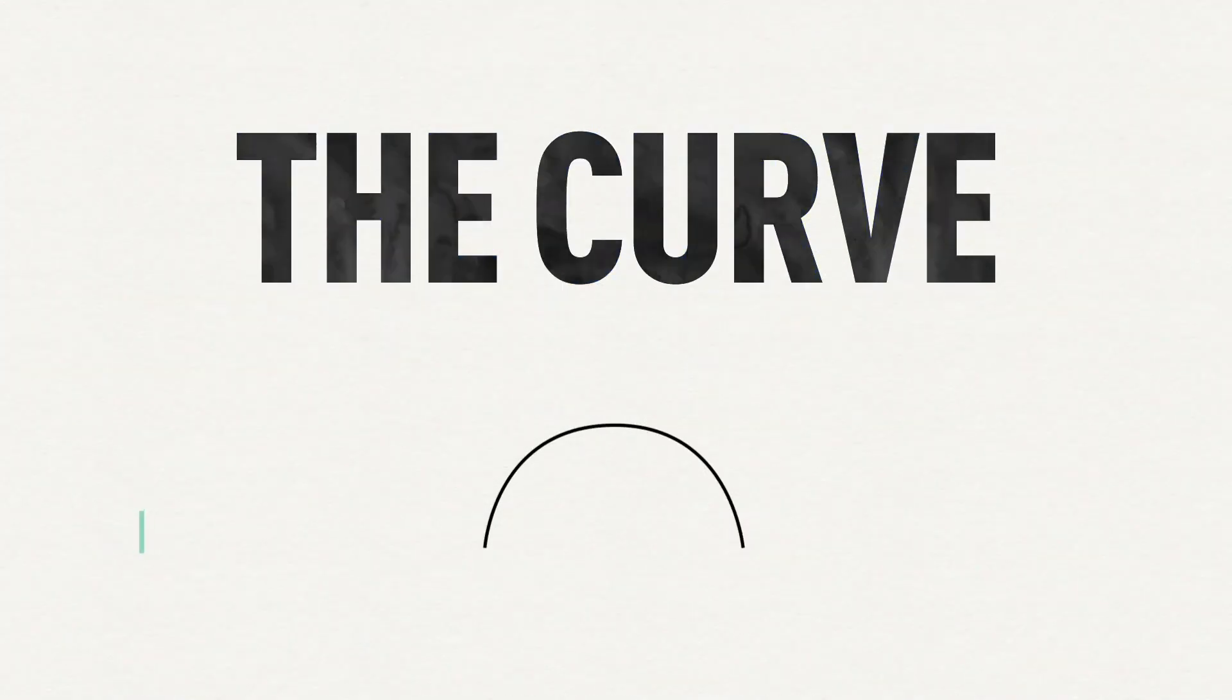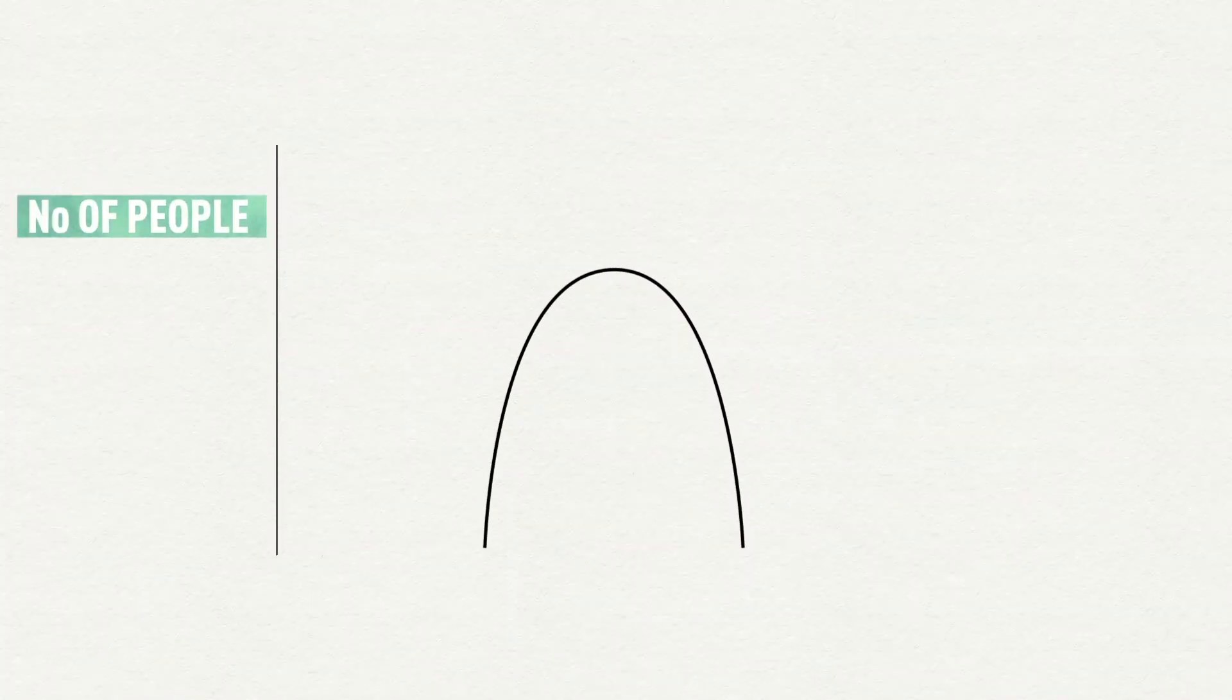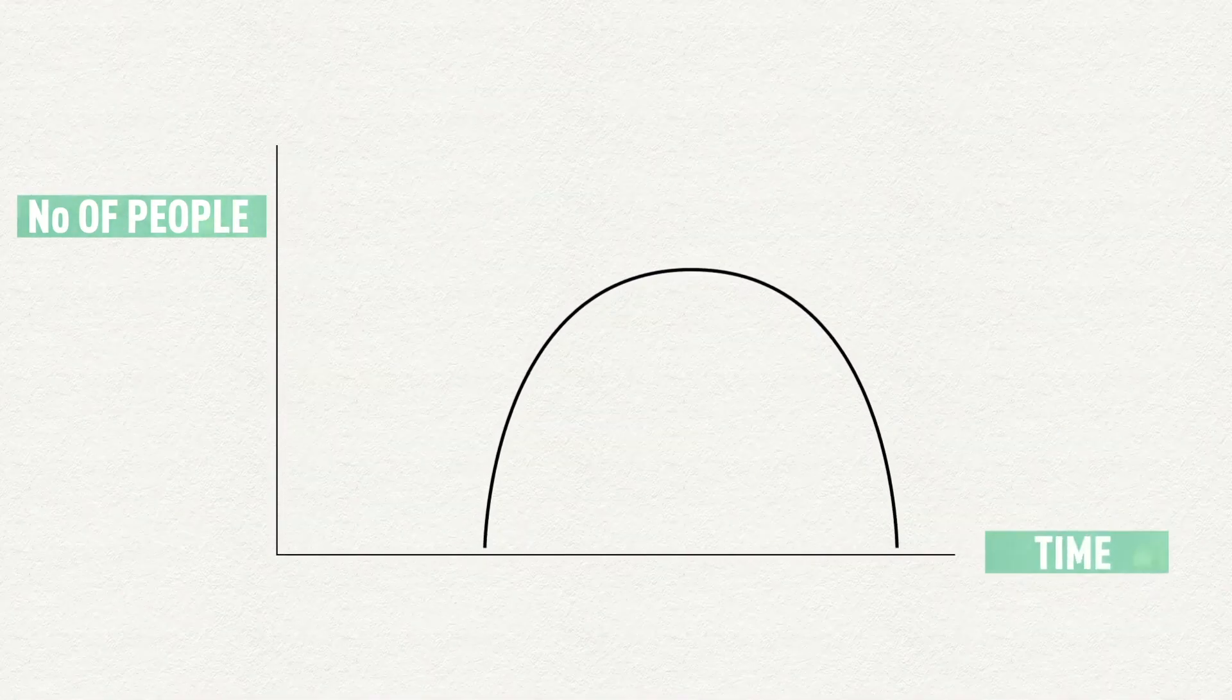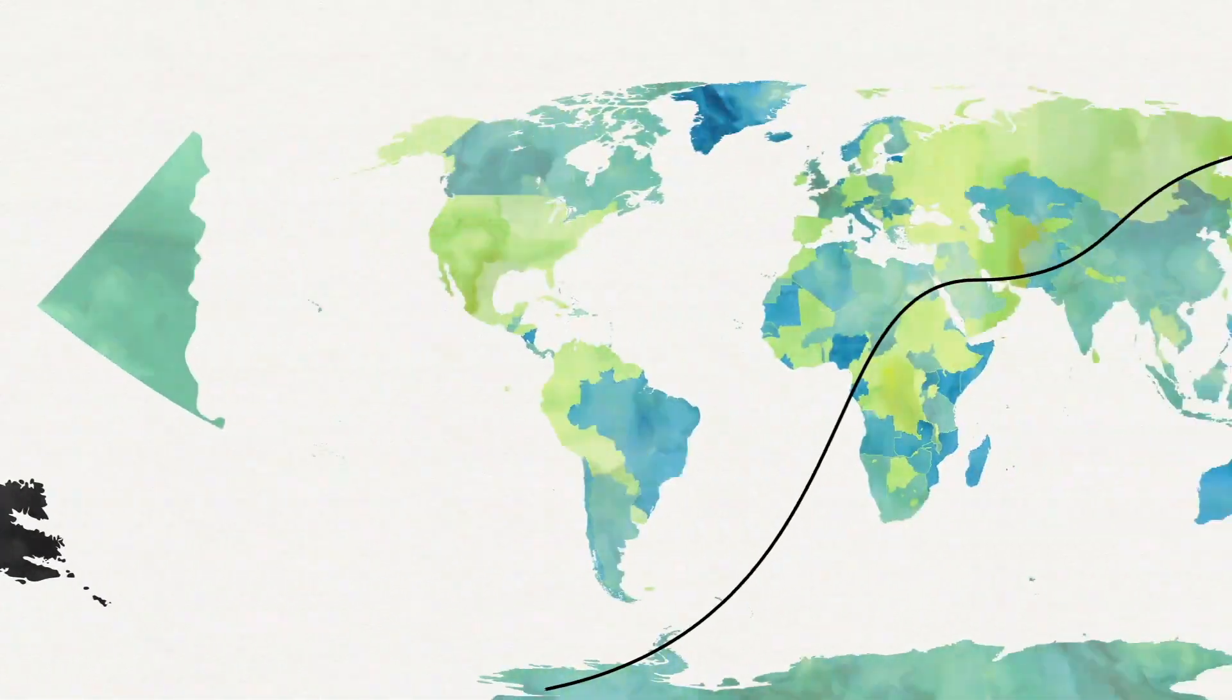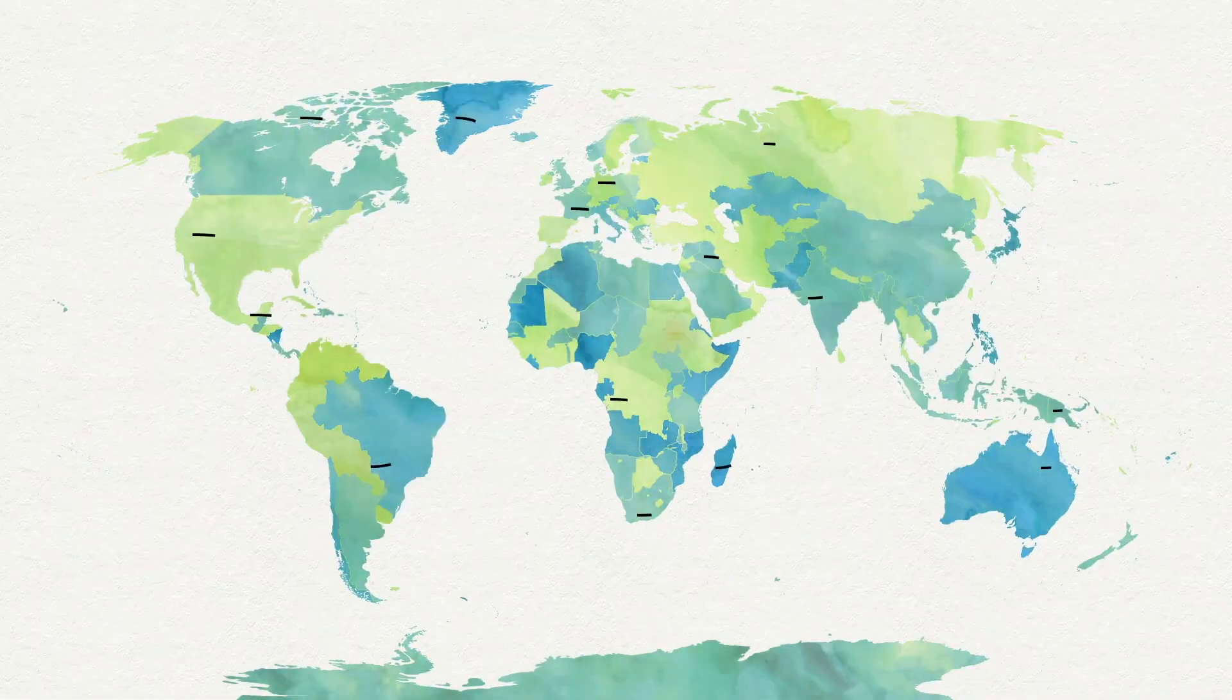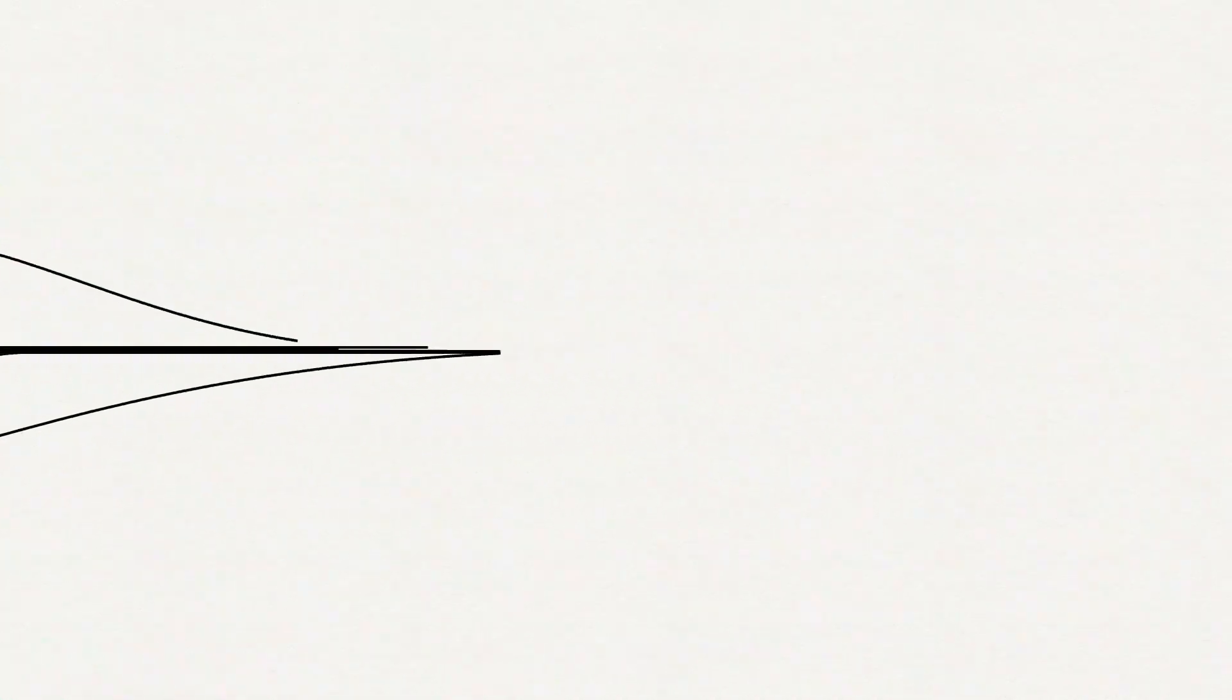Well, when we talk about the curve, we're talking about the number of people who get sick over a certain period of time. Our chief public health officer, Dr. Tam, and other public health officials across the country and around the world are tracking this information and mapping it out.